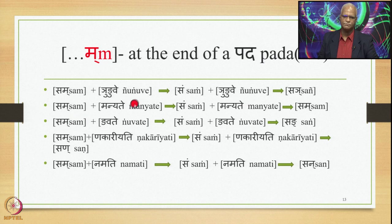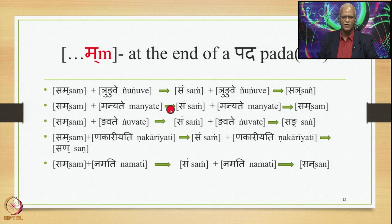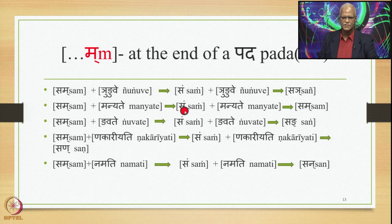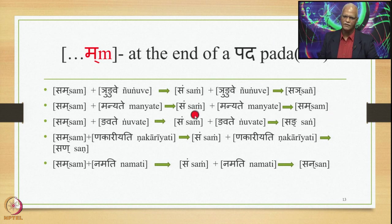Sam plus Manyate: Ma at the end of a pada is followed by another Hal Ma, so 8.3.23 substitutes it by Anuswara, giving Sam Manyate. Then 8.4.59 applies, substituting this Anuswara by the nasal Parasavarana of Ma (which is Ma itself), giving Sam-Ma-Manyate optionally, and Sam Manyate as the other optional output.